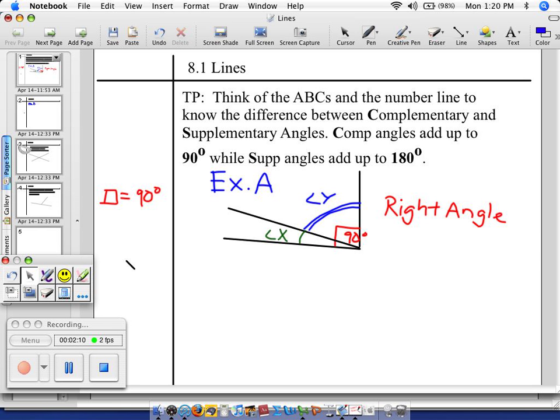I don't know the measure of angle X or Y, but I know what they add up to. What do they add up to? 90 degrees. Let's write that mathematically: angle X plus angle Y equals 90 degrees.